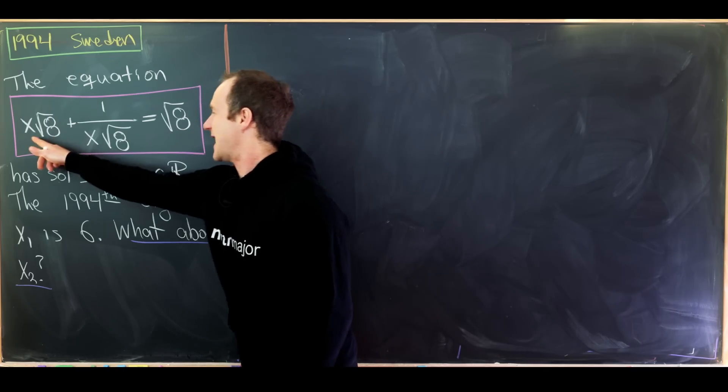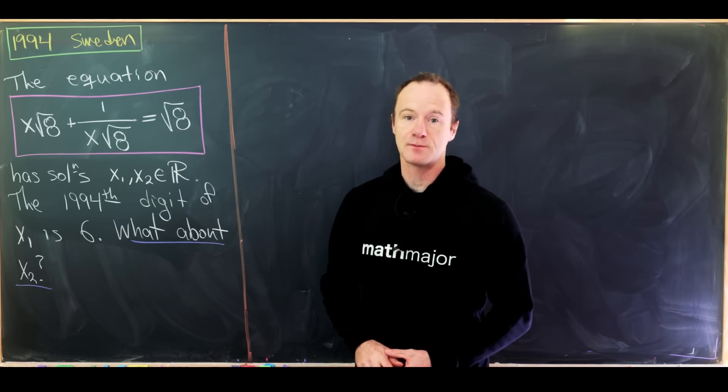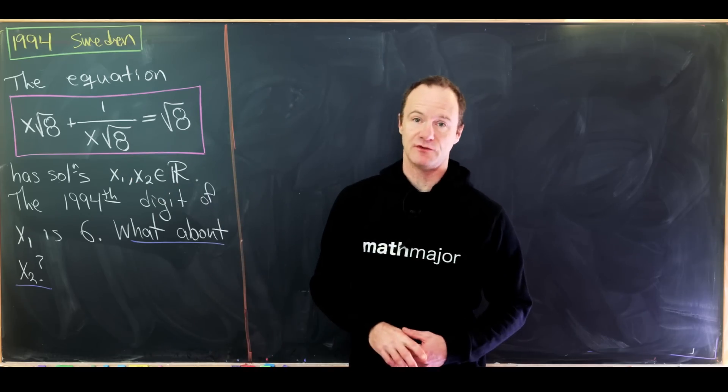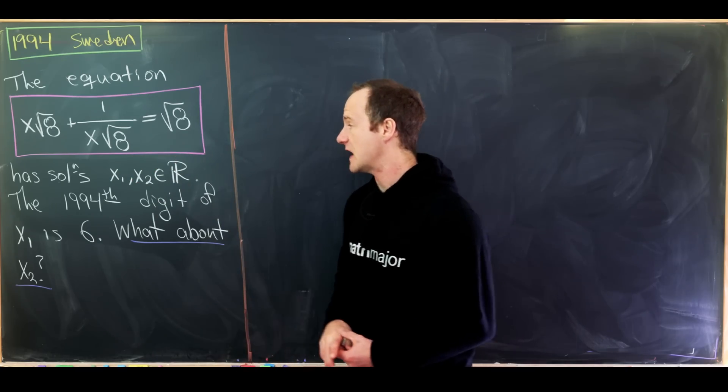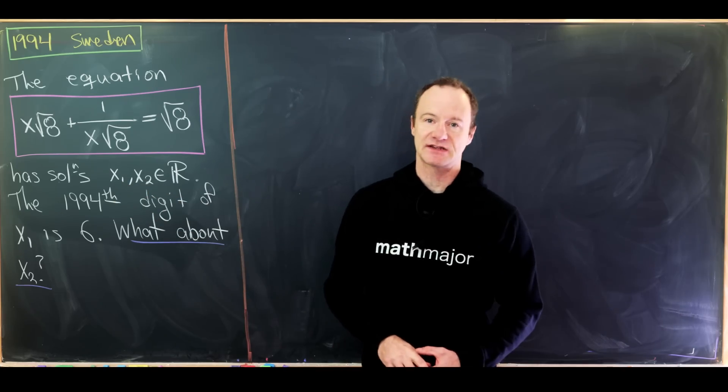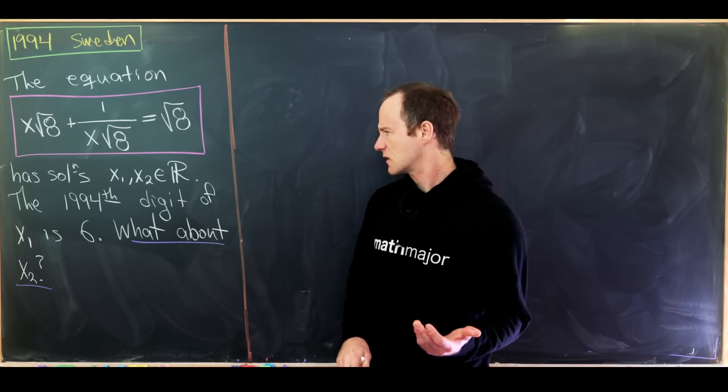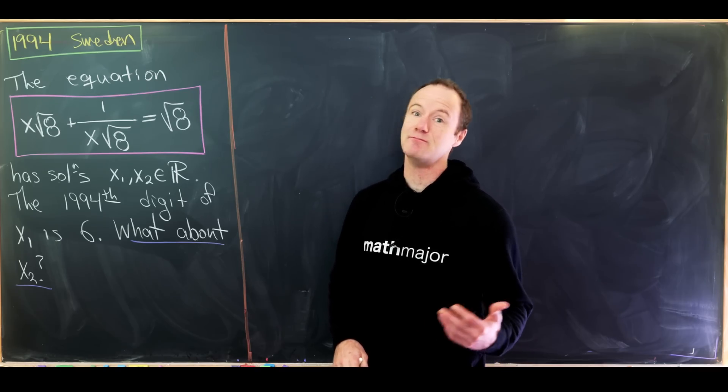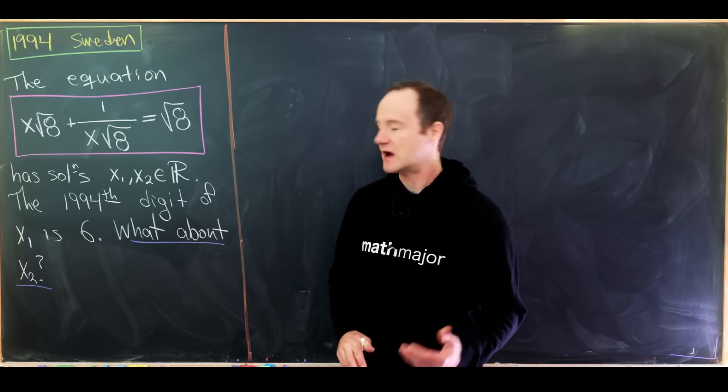The equation x times the square root of 8 plus 1 over x times the square root of 8 equals the square root of 8 has two real solutions. We'll call them x1 and x2. In fact along the path we'll actually find those solutions, although there's a method to do this problem where we don't find those solutions.